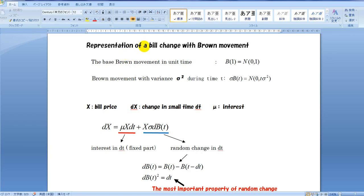The presentation of a bill changes with Brown movement. The base Brown movement in unit time is described like this. Using the same notation, Brown movement with variance sigma squared at time T is described as follows.